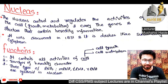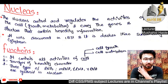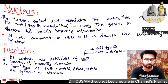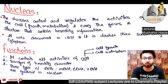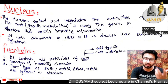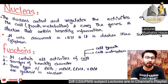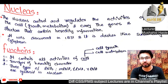The nucleus was discovered in 1831 and is darker than the surrounding cytoplasm. Its functions include controlling all cell activities such as growth and metabolism, transferring hereditary characters from parents to offspring. Three types of RNA — mRNA, tRNA, and rRNA — are synthesized in the nucleus.